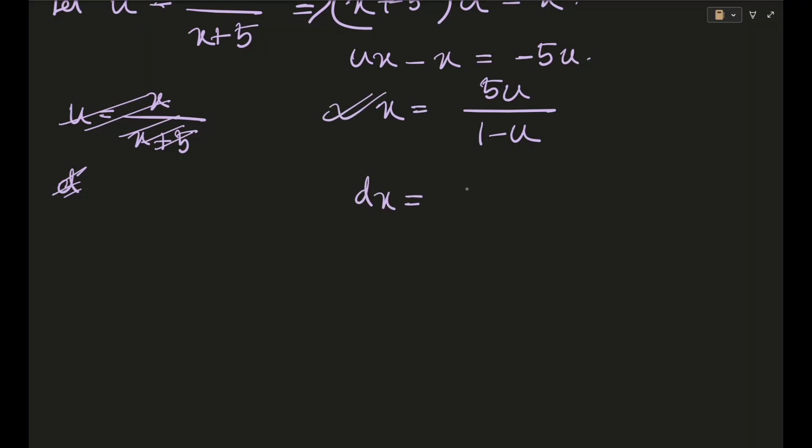So dx is equal to, this will I guess come out to be 5 into (1-u). Okay, I guess 5/(1-u)^2, because 1u and -u will get cancelled, and this will be du.